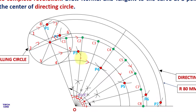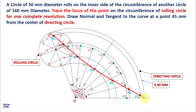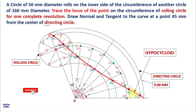In this way you can find all the points of the hypocycloid. Join these points freehand to complete the hypocycloid curve.